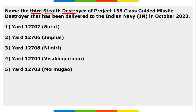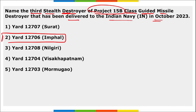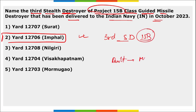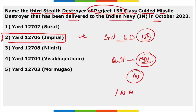The third stealth destroyer of Project 15B Class Guided Missile Destroyer — Yard 12706 — has been delivered to the Indian Navy in October 2023. It was built by Mazagon Dock Shipbuilders Limited and designed by the Indian Navy's Warship Design Bureau.